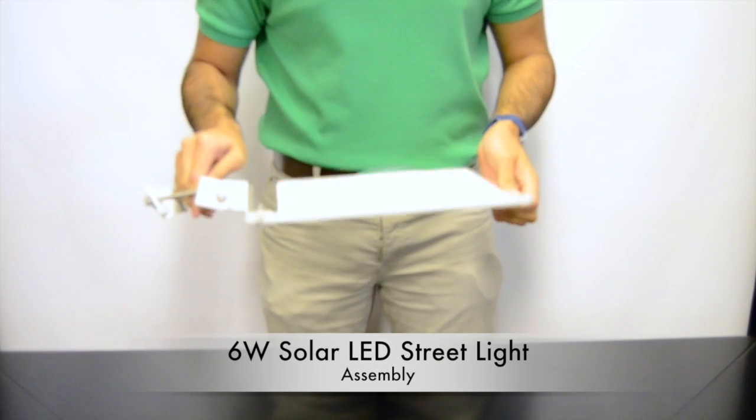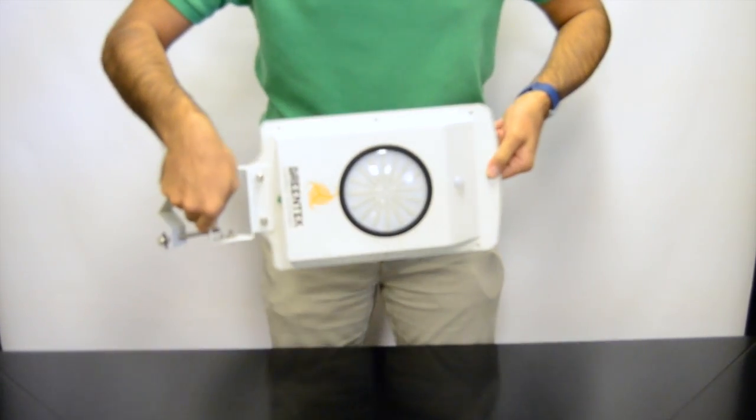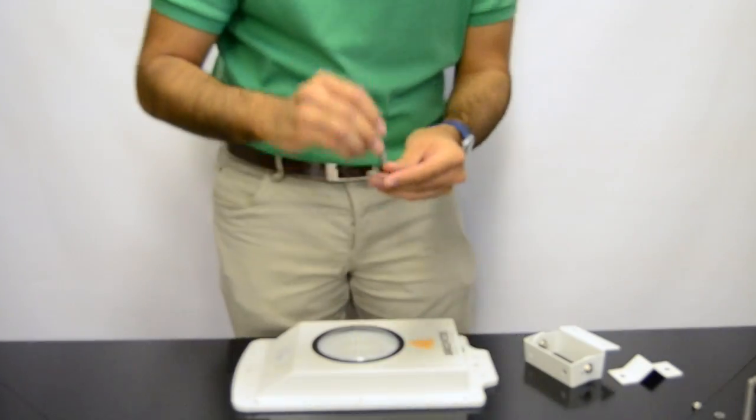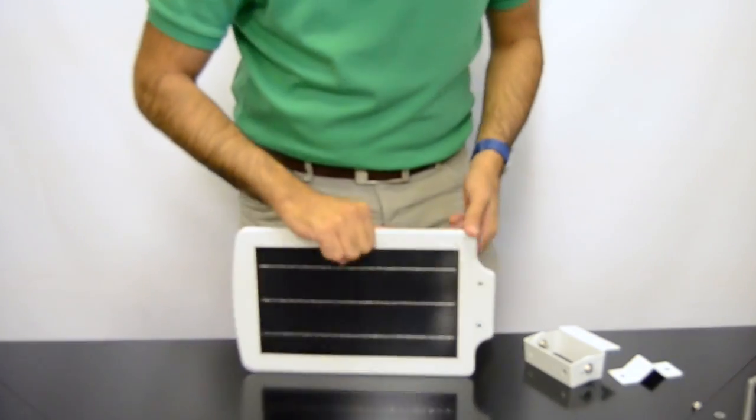Hey it's Si here again with Greentech Energy Systems and we're here assembling the 6 watt solar LED light. When receiving this light you will have installation instructions, the solar light and mounting material.